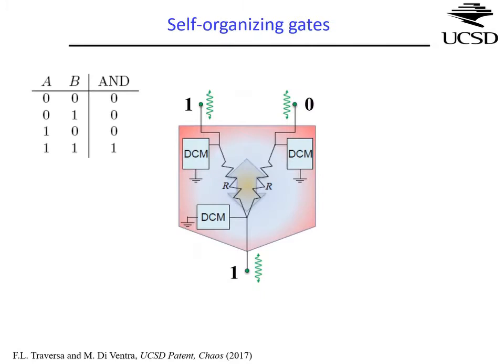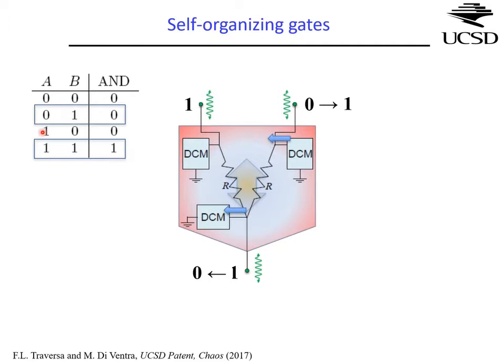To go deeper into the realization: take an AND gate where logic one is represented by +1 volt and logic zero by −1 volt. Inside these gates we have dynamical correction modules — active elements that read the voltages at the terminals. If a module realizes that the configuration does not satisfy the truth table, it injects current to push the terminal toward the correct value, satisfying a logically consistent proposition.